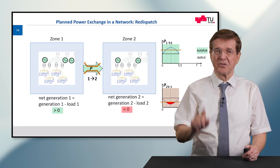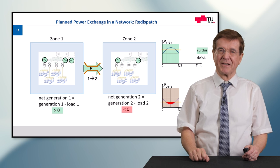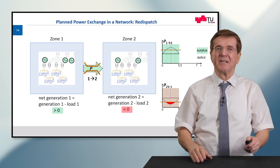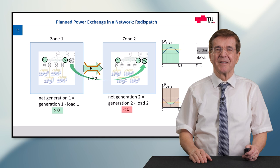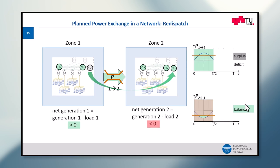There is only one solution to maintain the law of conservation of energy and keep the balance of power at equilibrium: we must start a third generation infeed in zone number 2. Now we have a balance of energy and each zone is in equilibrium. This is carried out by a subordinate authority. This concludes today's short lecture about exchange of power in the network and redispatch.